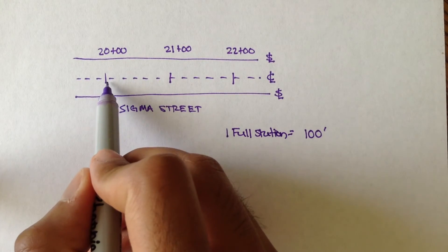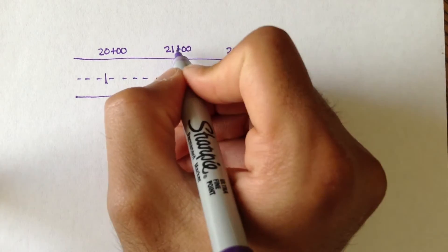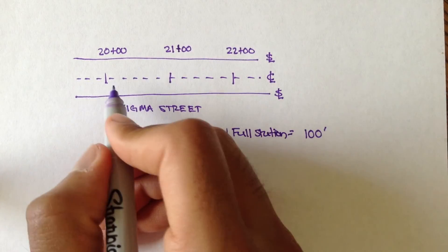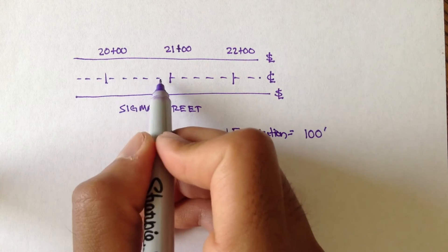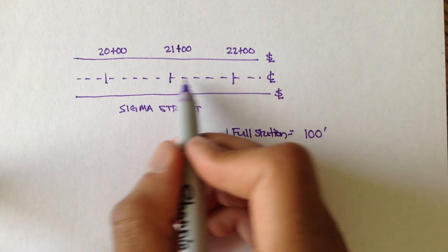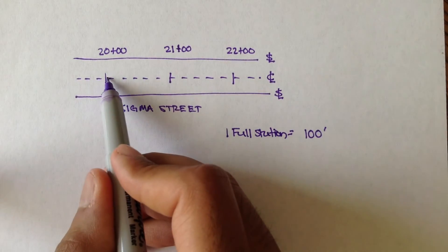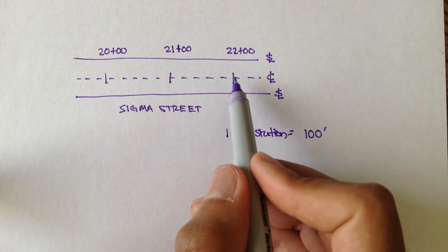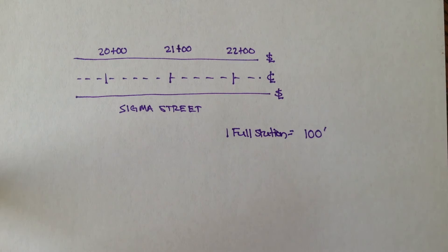So from station 20 plus 00 to 21 plus 00, the distance is 100 feet. From 21 plus 00 to 22 plus 00, the distance is 100 feet. And from 20 plus 00 to 22 plus 00, the distance is 200 feet. So those are full stations.